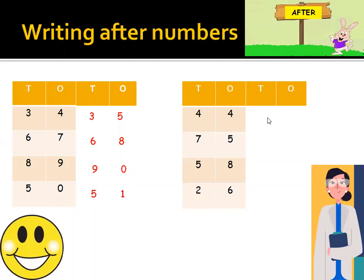Next example is 44. After 44, here comes 45. Next is 75. After 75, which number will be there? Can you guess? Yes, it's 76. Next is 58. After 58, which number will be there? Yes, it's 59. And next is 26. After 26, which number comes? Yes, 27.